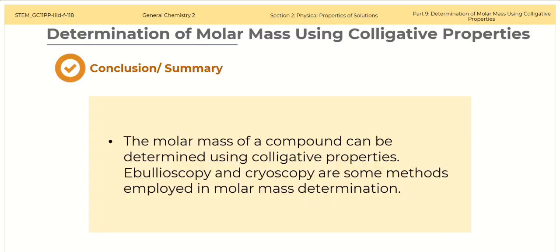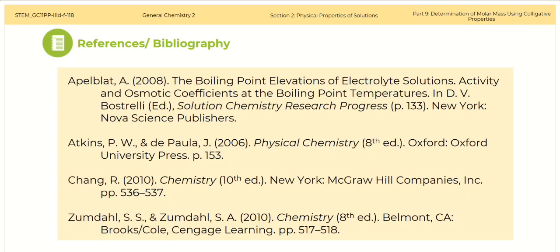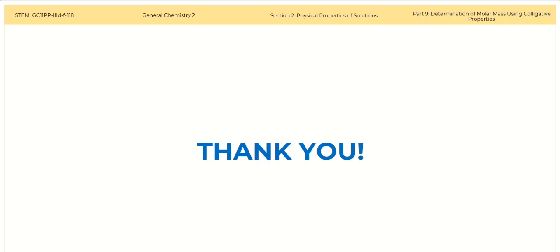To summarize, the molar mass of a compound can be determined using colligative properties. Ebulioscopy and cryoscopy are some methods employed in molar mass determination. To learn more about this lesson, kindly visit the following references. And that's all. Thank you.